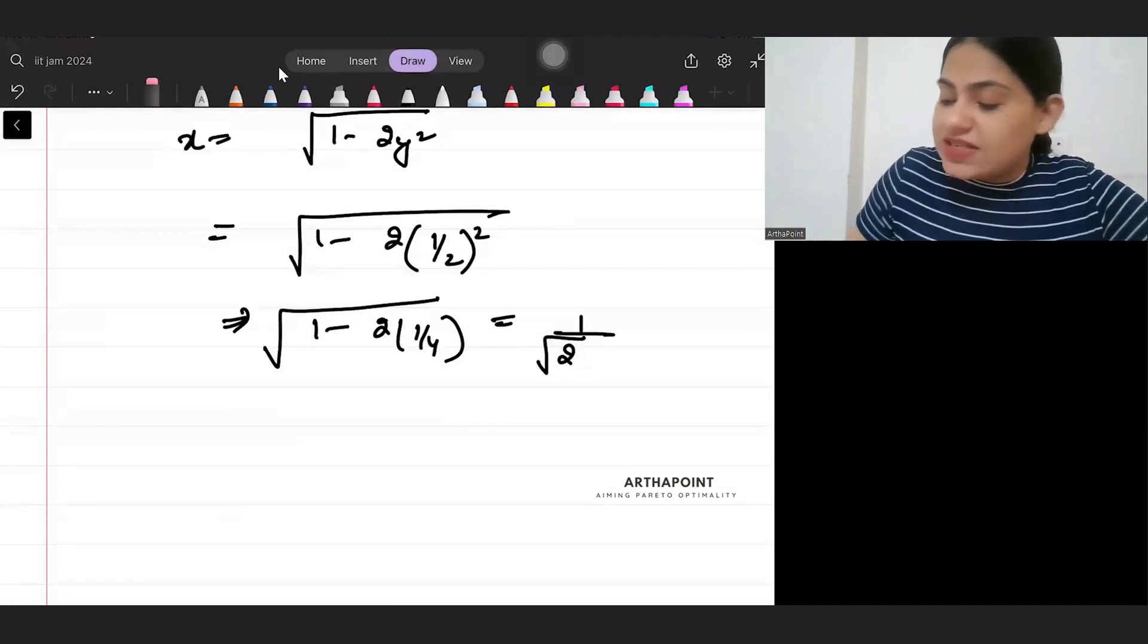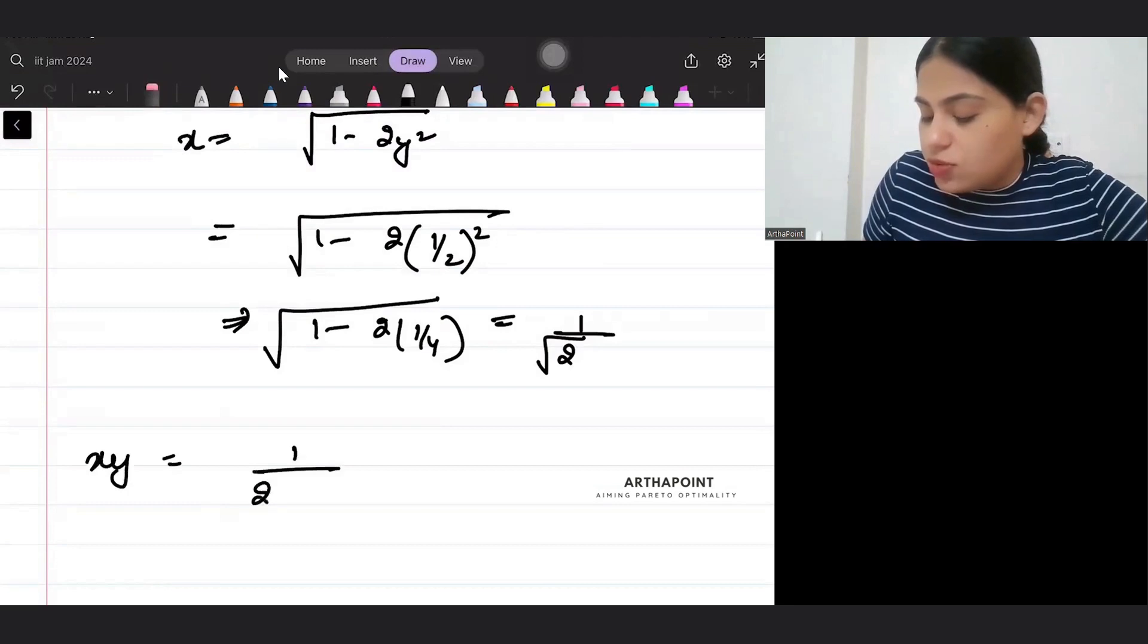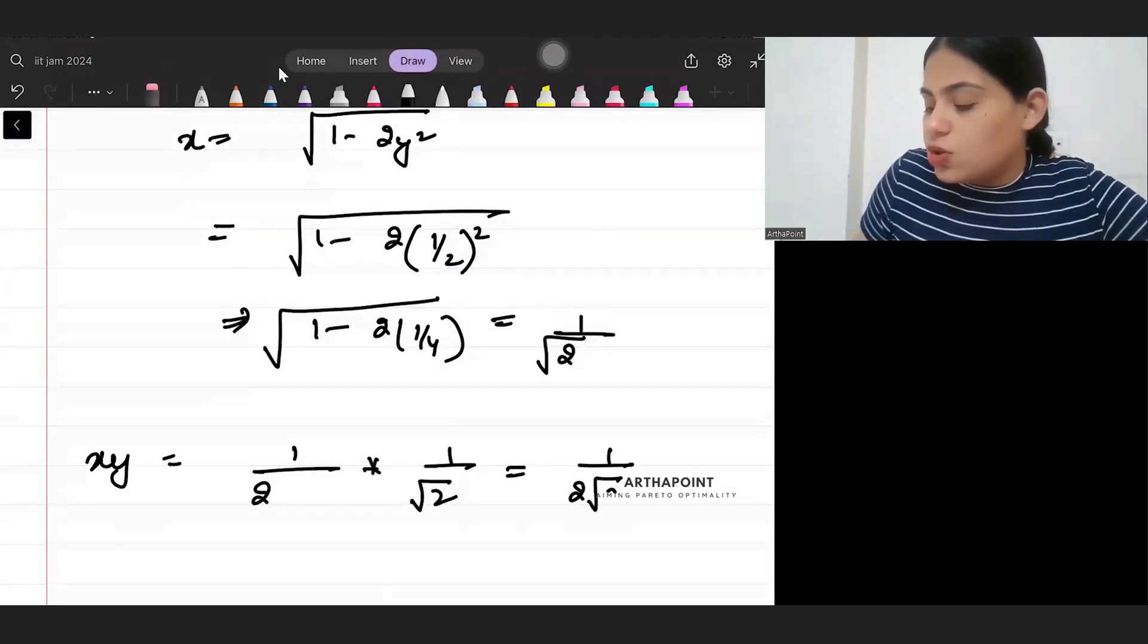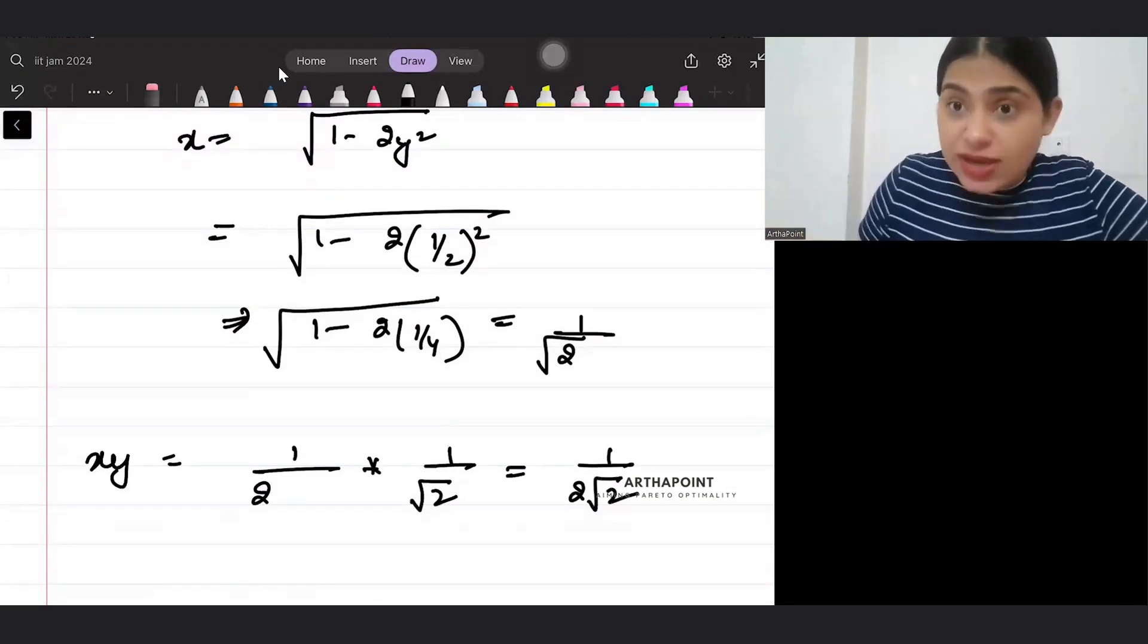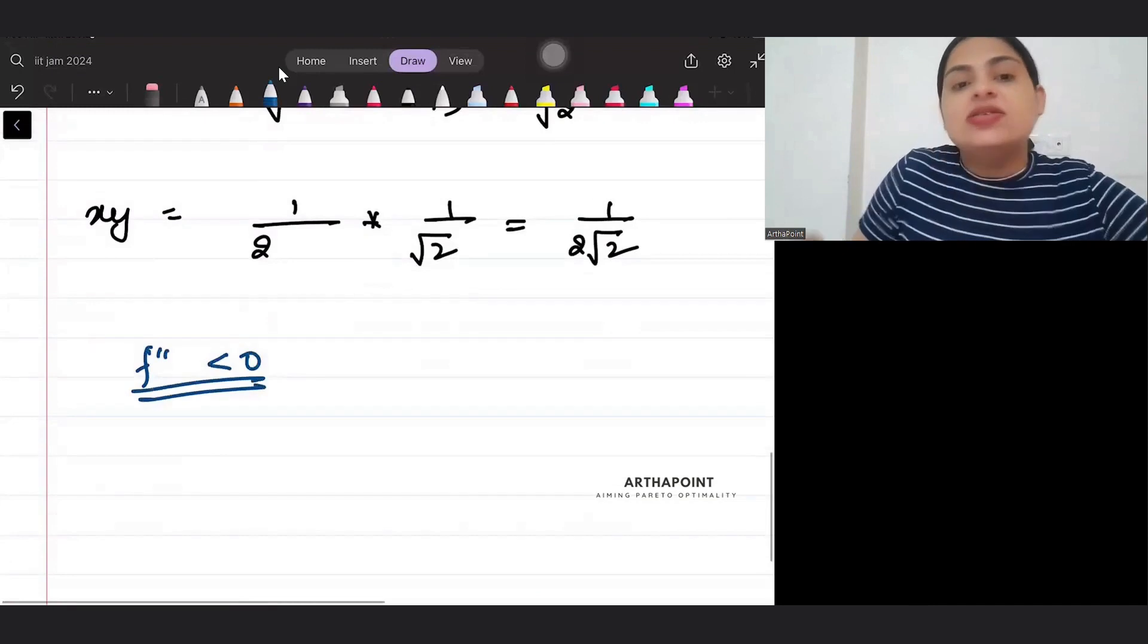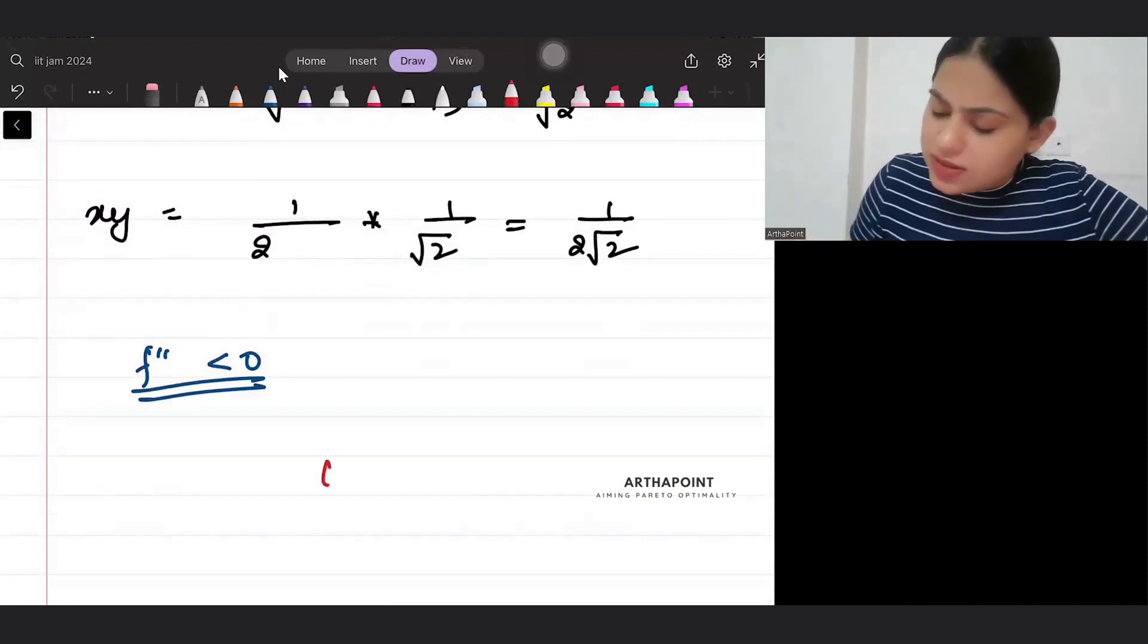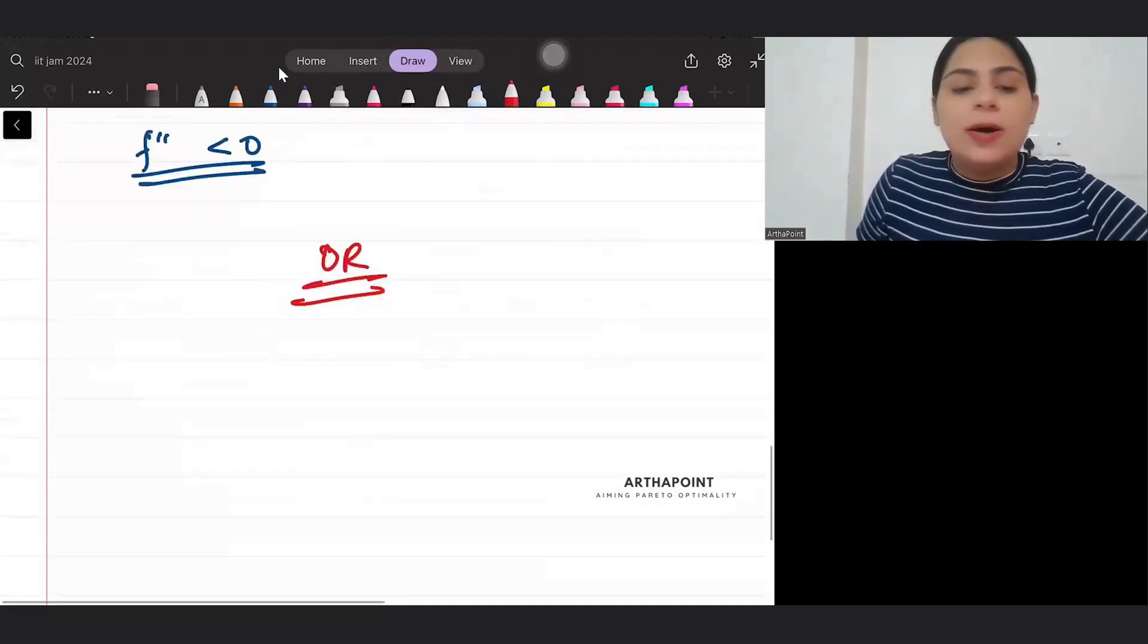What is the value of your function? Your function is x into y, so it will be 1 by 2 into 1 by root 2, so 1 by 2 root 2. Please check, make sure that you check that the second derivative is less than 0. Only then it is a maximum.